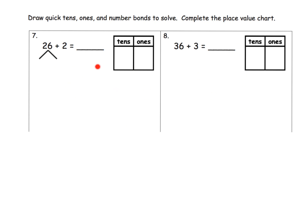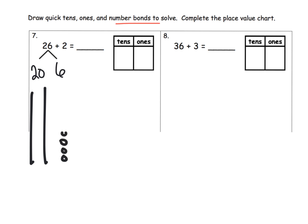This is more of the same, but they're also asking us to use the number bond, because while the count on method is nice, we want students to develop even more flexibility to be better mathematicians. We take 26 and decompose it to be 20 and 6. We draw our quick tens: 20 looks like that, and 6 looks like one, two, three, four, five, six. Now we add in two more: one, two. We end up with two tens and eight ones, so our answer is 28.